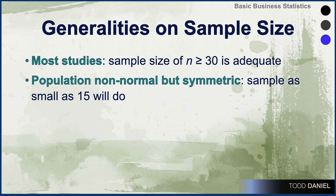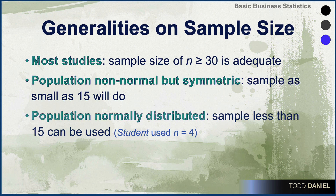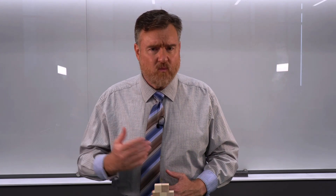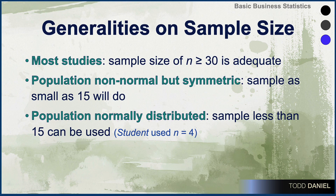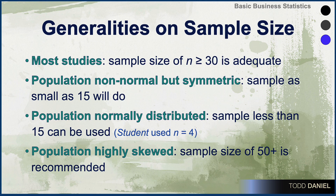If your population is non-normal but symmetric, such as if it's a little more kurtotic — mesokurtic or platykurtic — then you can get away with using a sample as small as 15. And if your population is normally distributed, then you can use a sample size less than 15. Remember that student William Gossett at the Guinness Brewing Company was using sample sizes as small as 4. But if your population is highly positively or negatively skewed, then you need to have a sample size of 50 or more to satisfy this assumption of normality.